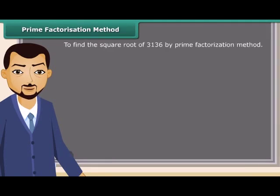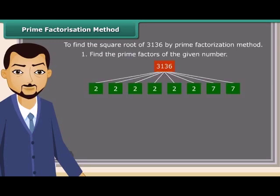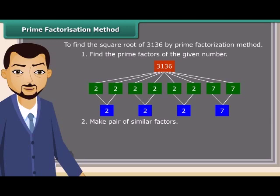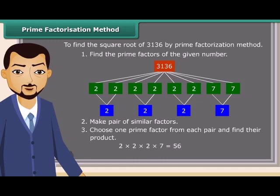Now, we will try to find the square root of a number by prime factorization method by following some steps. First of all, find the prime factors of the given number. Now, make pair of similar factors. After that, choose one prime factor from each pair and find their product. So, the product thus obtained is the square root of the given number.